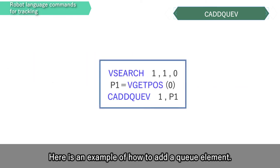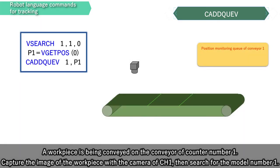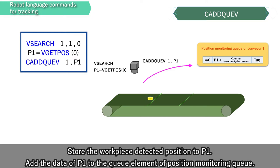Here is an example of how to add a queue element. A workpiece is being conveyed on the conveyor of counter number 1. Capture the image of the workpiece with the camera of channel 1, then search for model number 1. Store the workpiece detected position to P1. Add the data of P1 to the queue element of the position monitor in queue.